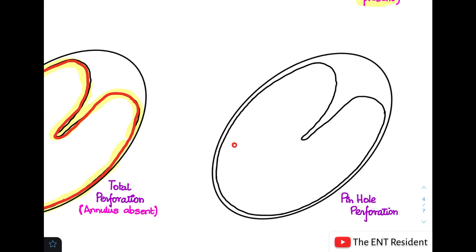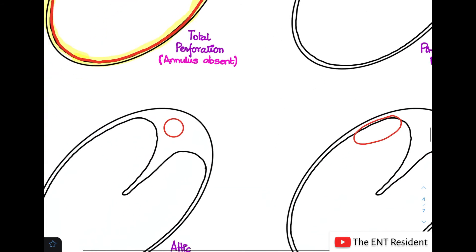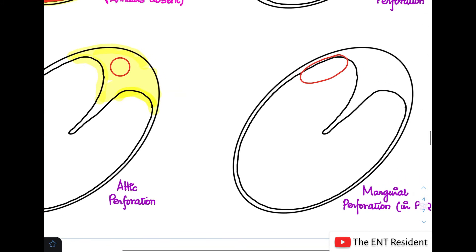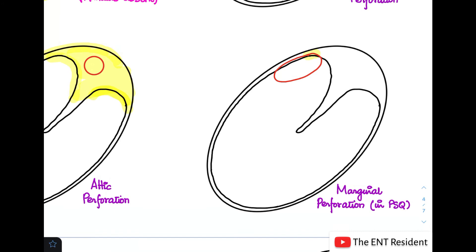The next kind is the unsafe perforation, which - one of them is the attic perforation. The attic region is mostly in the pars flaccida region. As we know, the pars flaccida is this portion which is lying in between the malleal folds, above the level of these. So this whole region is the attic region, and here whenever there is a perforation, we show it over here. Also, the second type of unsafe perforation is a marginal perforation, as you can see over here.